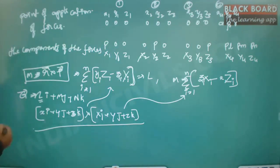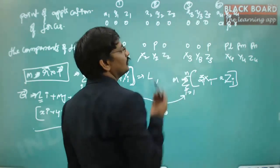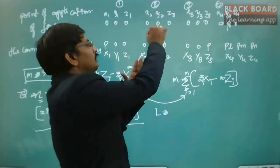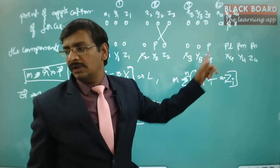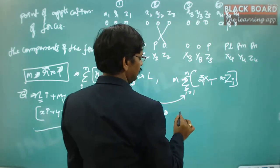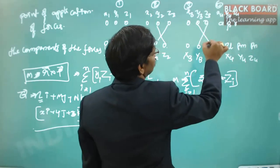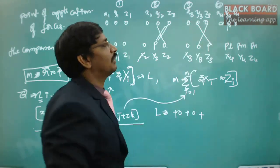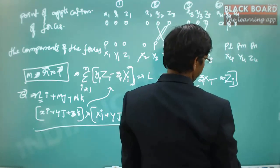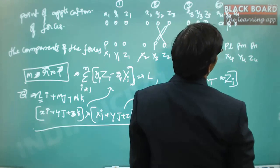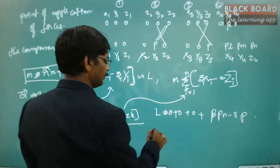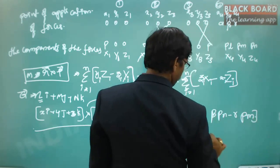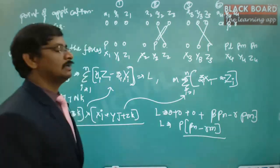To summarize: to find L, M, N — for L (the I component of the moment), use AD - BC, ignoring the X column. Summing contributions: from forces 1, 2, and 3 all give 0 - 0 = 0 since their points of application are at the origin. The only non-zero contribution is from force 4: β·PN - γ·PM. So L = P(βN - γM).